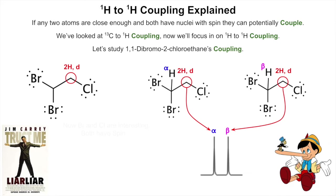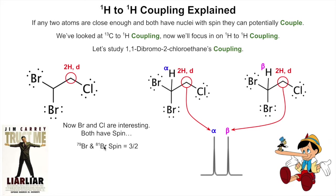Bromine and chlorine are really interesting — both have spin, like carbon-13 and the H1 isotope. Bromine has two main isotopes, 79 and 81, in about equal amounts — about 51% bromine-79 and 49% bromine-81 — and they each have a spin of three-halves. Chlorine has two isotopes, 35 and 37; chlorine-35 is the more abundant at about 75%, with about 25% chlorine-37. These isotopes of chlorine also each have a spin of three-halves.